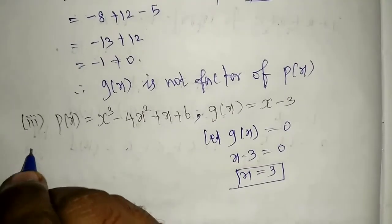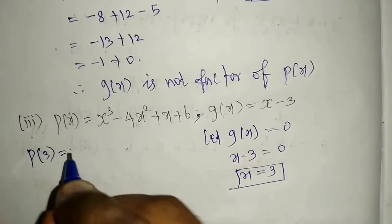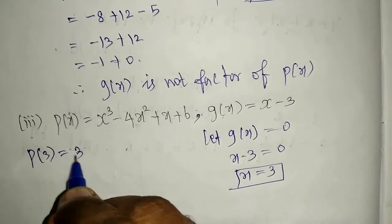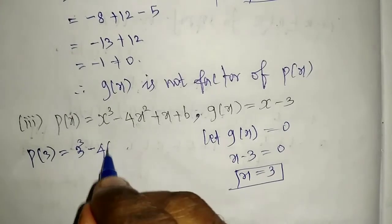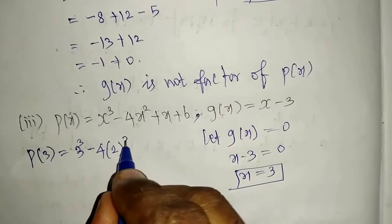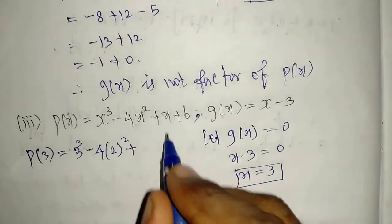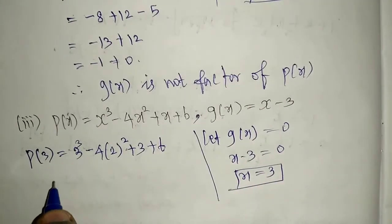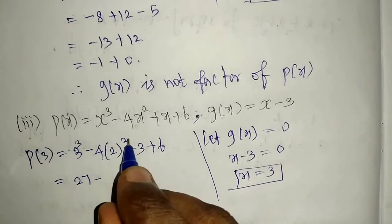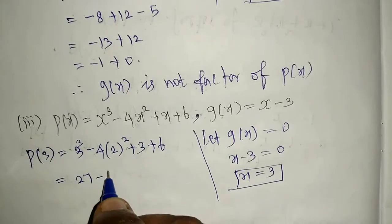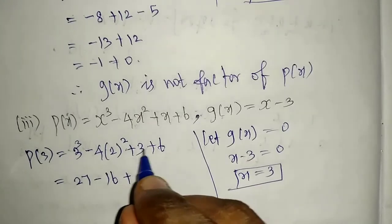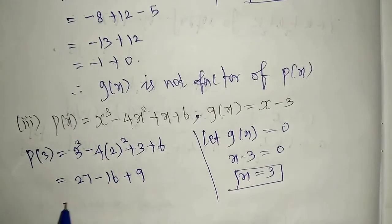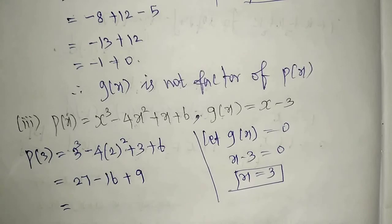p of 3 equals 3 cubed minus 4 into 3 squared plus 3 plus 6. Now 3 cubed is 27, and 4 times 3 squared... wait, I made a mistake — I wrote 2 instead of 3 for the x value. It should be 3 squared, which is 9, and 4 times 9 equals 36.